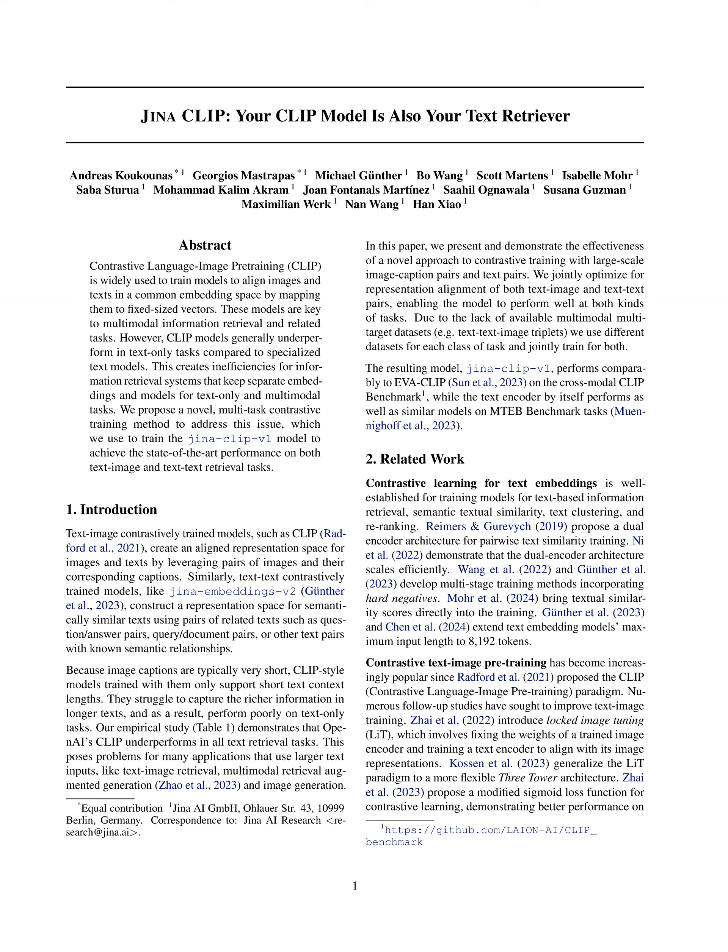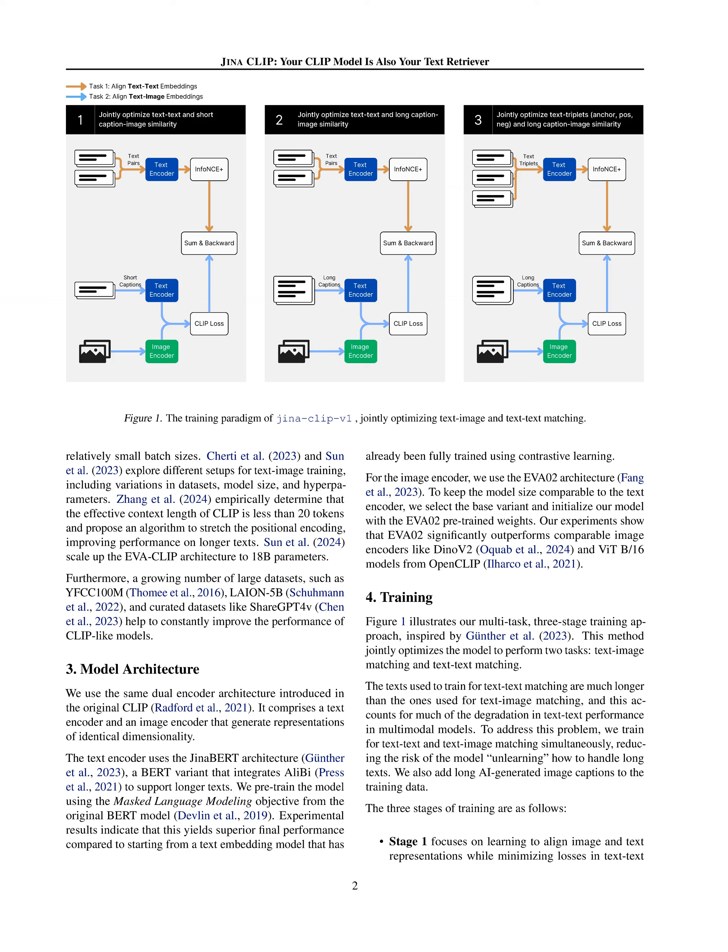To address this issue, the novel approach focuses on contrastive training with large-scale image-caption pairs and text pairs. By jointly optimizing for representation alignment of both text-image and text-text pairs, the model is enabled to excel in both types of tasks. The method incorporates a three-stage training approach that includes training for text-image matching and text-text matching simultaneously, utilizing datasets with varying text lengths to prevent the model from unlearning how to handle long texts.